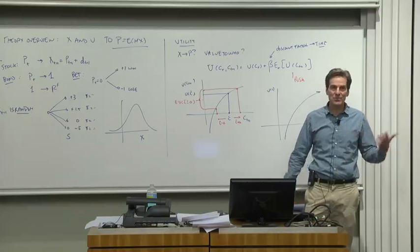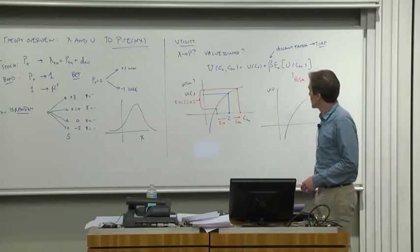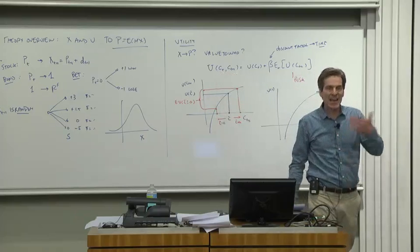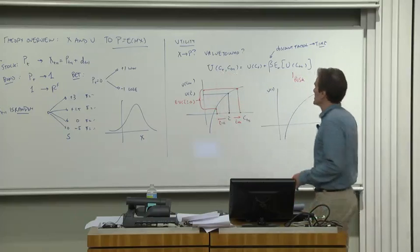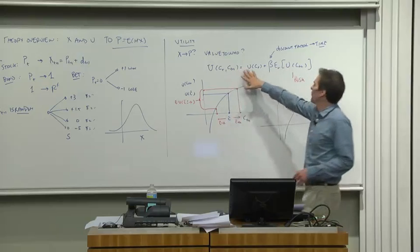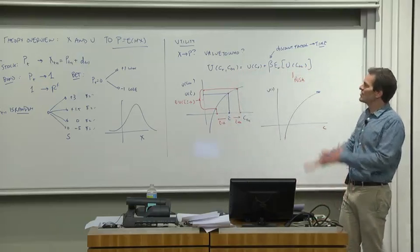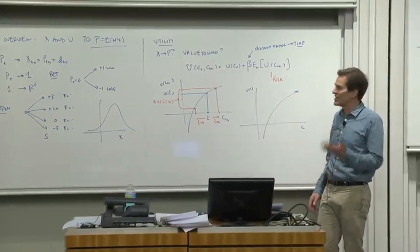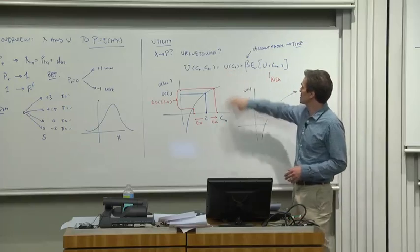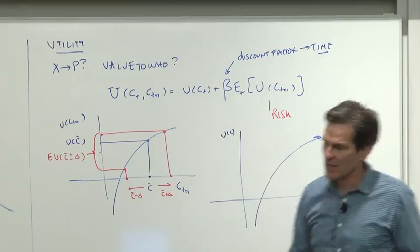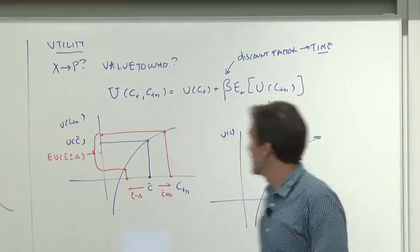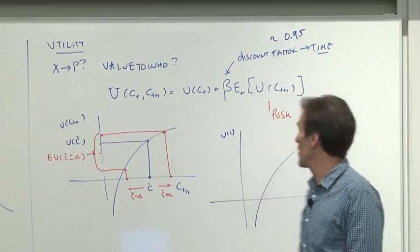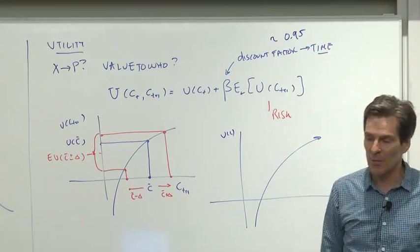That's what the utility function does. It answers the question, value to who? So the way we write down the utility function, the utility is defined over consumption today and consumption tomorrow, ct and ct plus 1. And the form that we'll use almost to start with, we can do fancy utility functions. Today we're doing the very simple version to understand how everything works. It'll be the utility of consumption today plus beta, a discount factor. That's a number typically on the order of 0.95 at an annual basis, just a number, times the expected utility of consumption tomorrow.